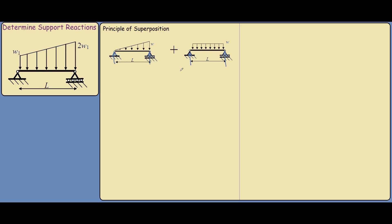Let's start with the easiest one: our rectangular loading. If we transform this distributed load into a point load, it would simply be W times L, the area under the distributed load. And since this point load acts at the center, we can see that our reaction supports it equally, so our reactions would be WL/2 and WL/2.